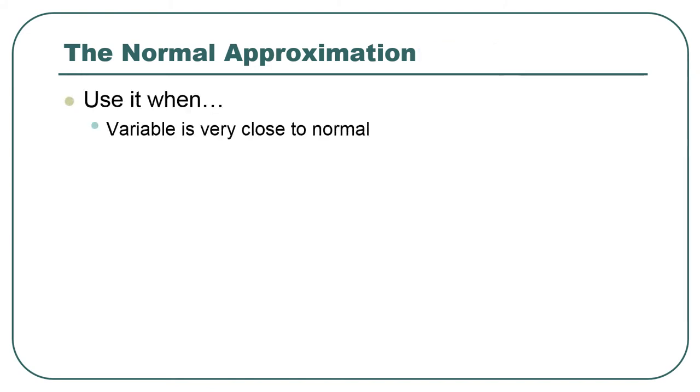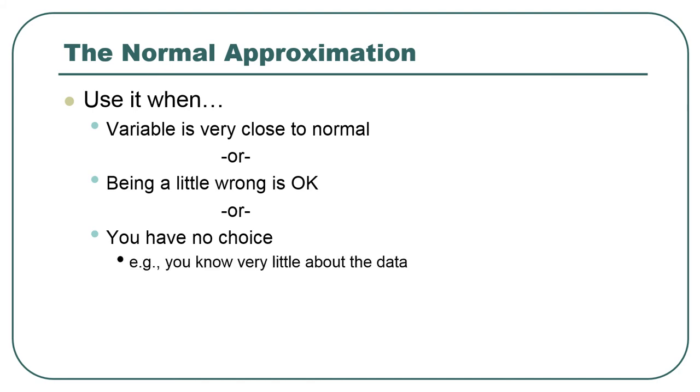So normal approximation, we should use it, or at least it's okay to use it. It's not like you should. It's okay if the variable is pretty close to normal, or if being a little bit wrong is okay, or if you have absolutely no choice. However, sometimes you should do nothing. Actually, there's a lot of options when you get into some more advanced stats. You should generally not use it when you have no choice, if there's any hint that you're going to really screw things up by using the approximation. And it's kind of hard sometimes to know how screwed up you are.